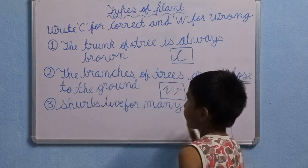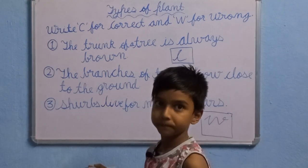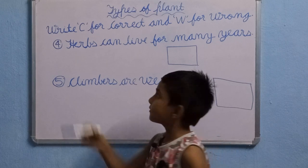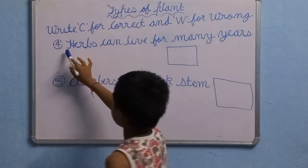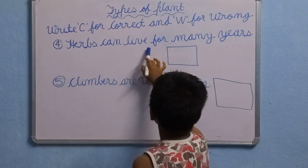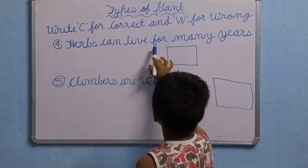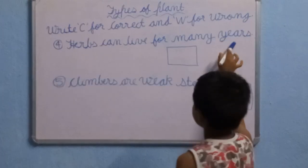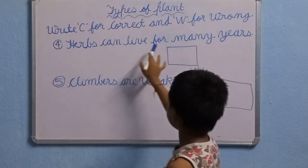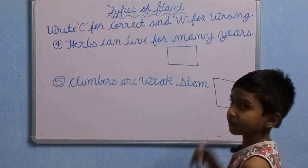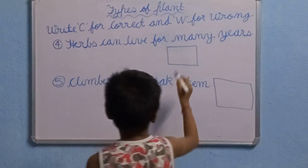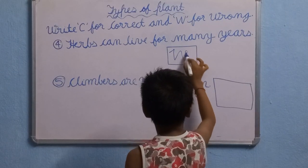Now next question. Herbs can live for many years. This is wrong — W for wrong.